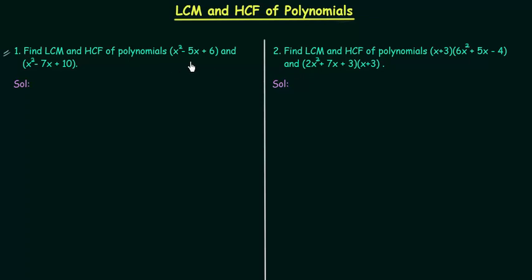We have two quadratic equations and we have to factorize them. I hope you know how to factorize quadratic equations; if you don't know, I will upload a separate presentation on this. HCF is sometimes called GCD, the abbreviation for greatest common divisor, or GCM, the abbreviation for greatest common measure. So don't confuse yourself with GCD and GCM — they are nothing but HCF.